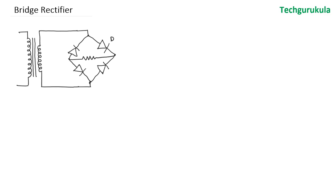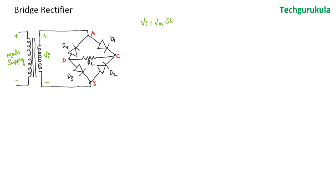Let me take the bridge rectifier circuit diagram. We have four diodes — D1, D2, D3, and D4 — where RL is the load resistor. At the primary winding we have the main supply, and at the secondary winding we have the input voltage VI, which is a step-down version of the main supply. This is called a bridge rectifier because the diodes are put in bridge configuration. Let me name the nodes: A, B, C, and D for our reference.